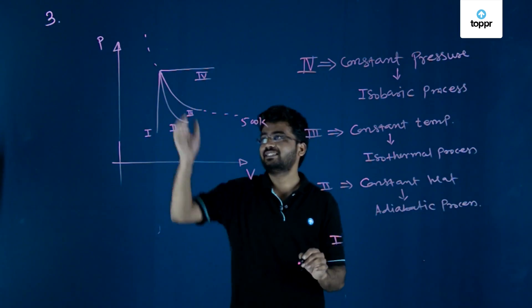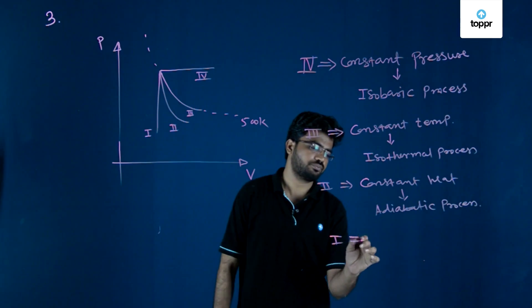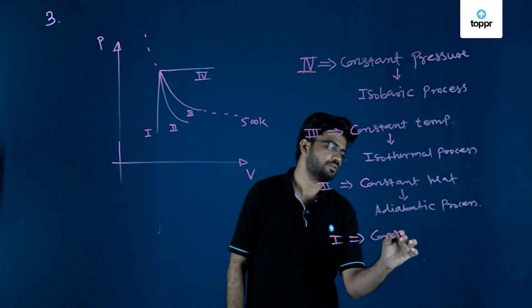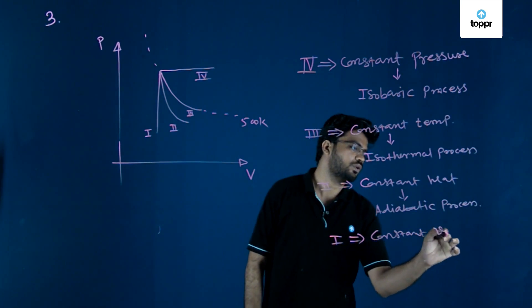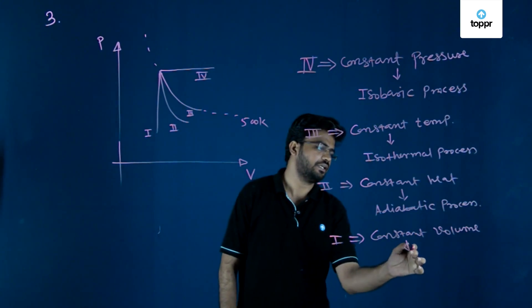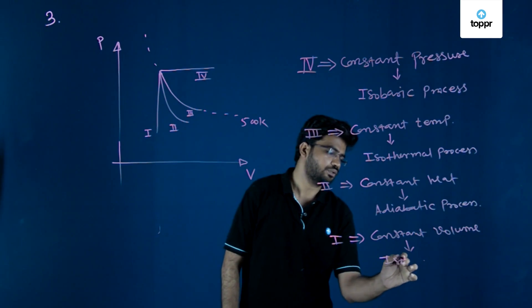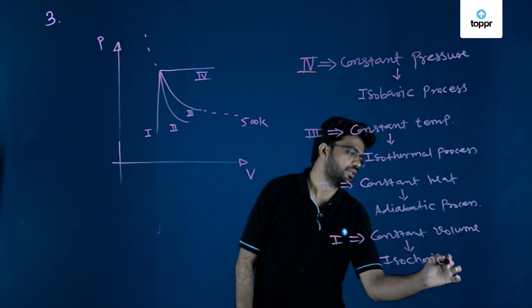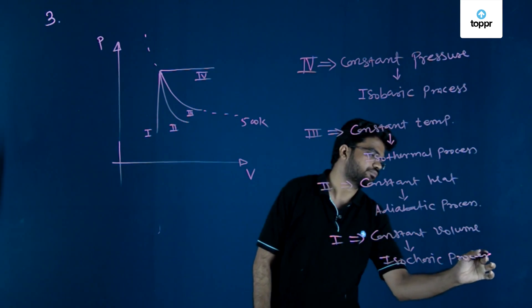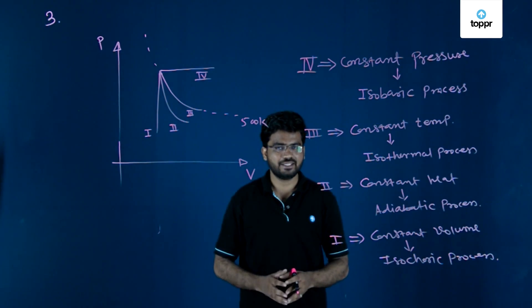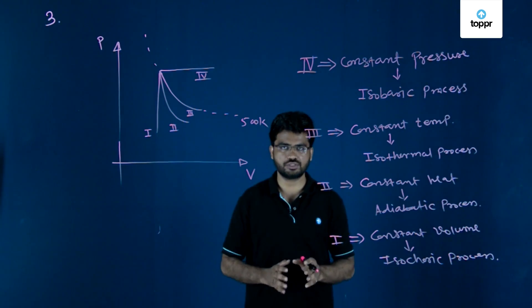The first is carried out with constant volume, so it is an isochoric process. As you can see in the options, option number three is the correct answer for this question.